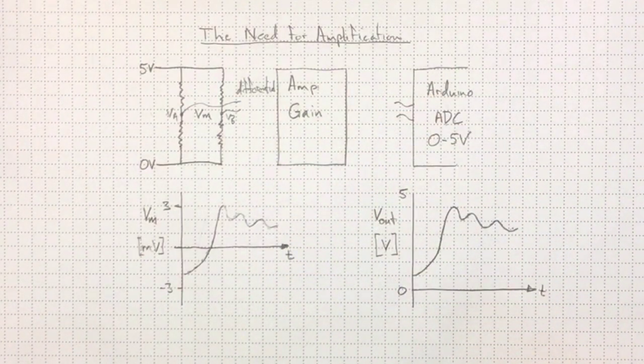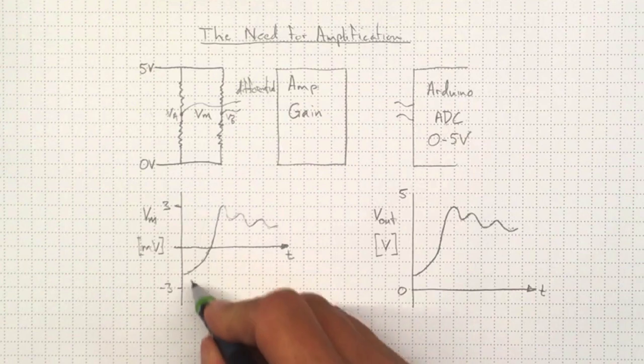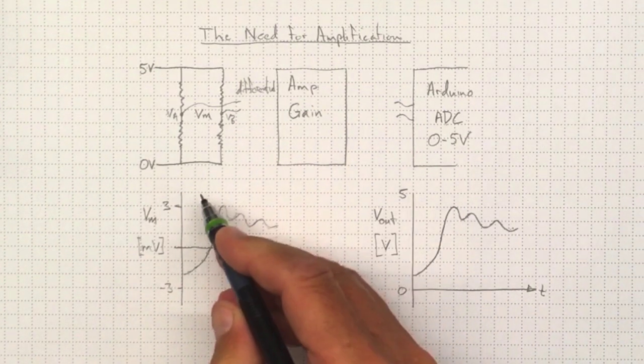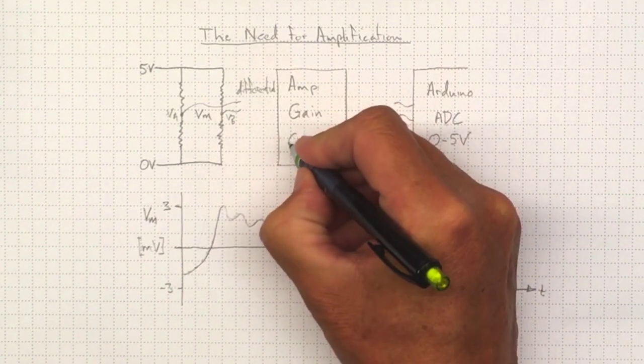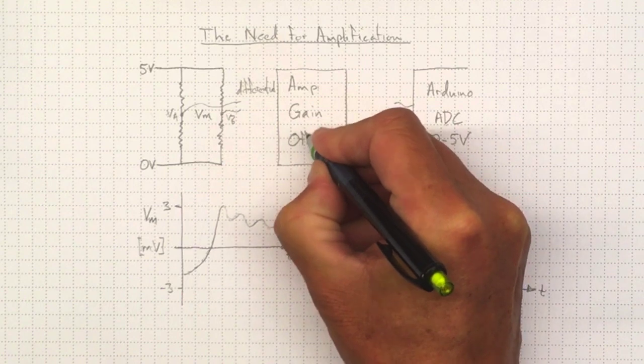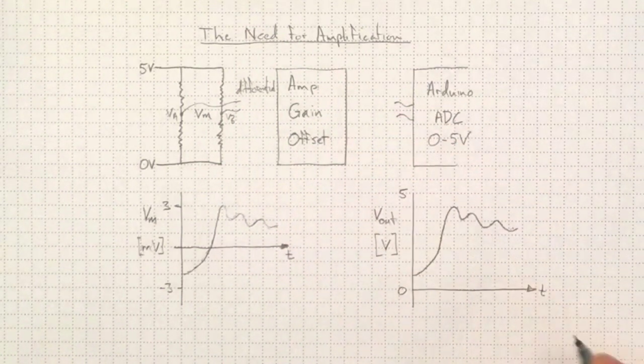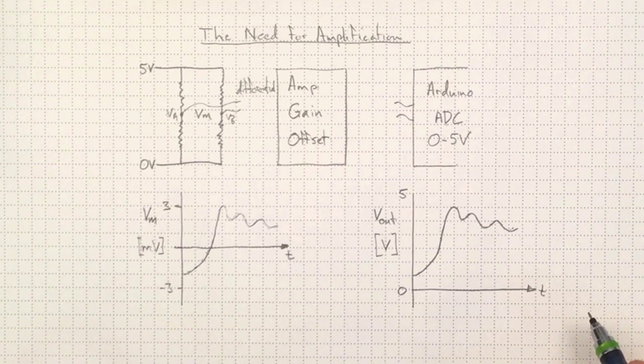But in addition, we need to get this from negative up to positive. So we also want an amplifier that can provide an offset for us.